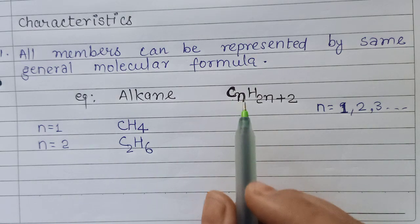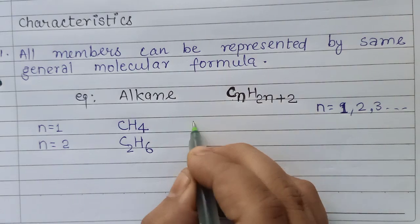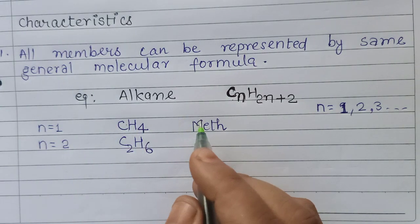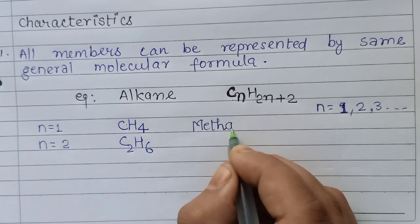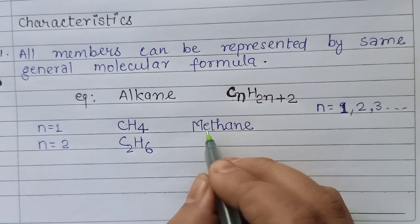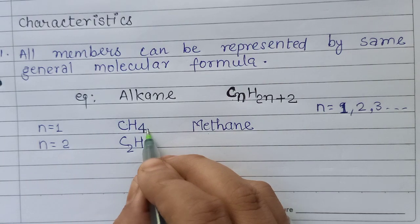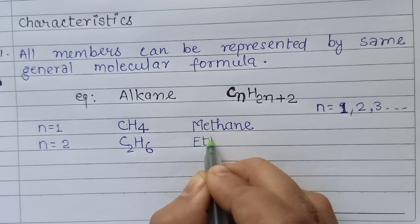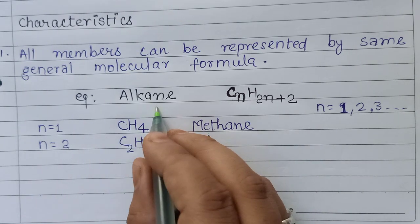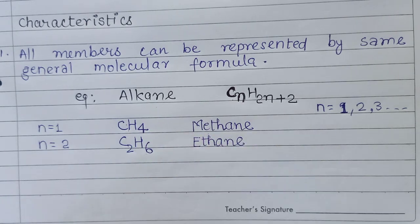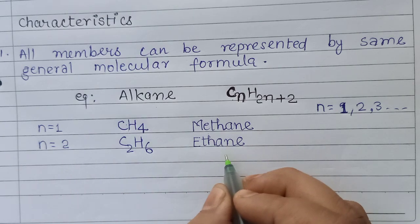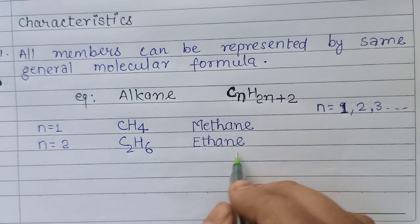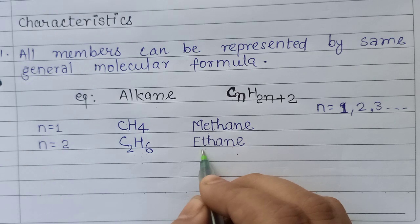For one carbon we write 'meth', and since it is a member of the alkane series we add 'ane', giving the name methane. For two carbons we write 'eth', and again adding 'ane' for the alkane series gives the name ethane.